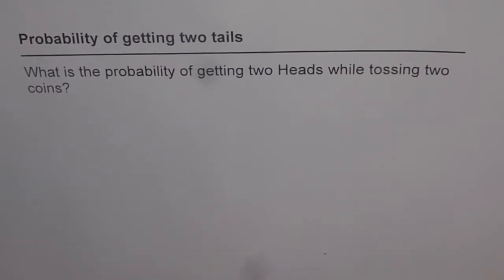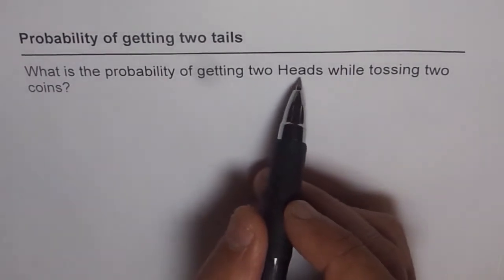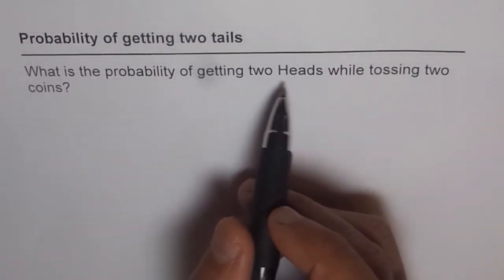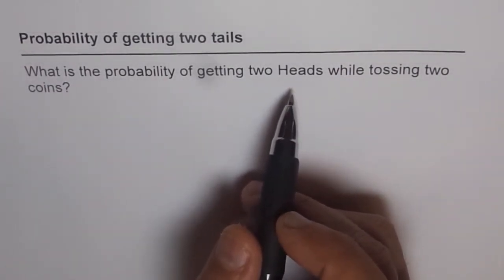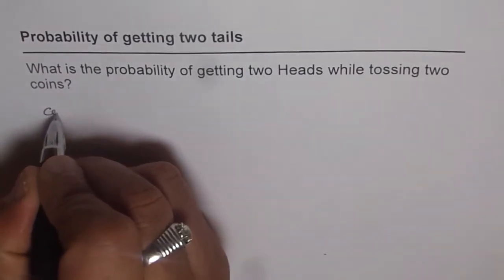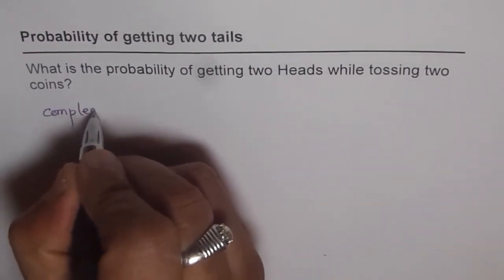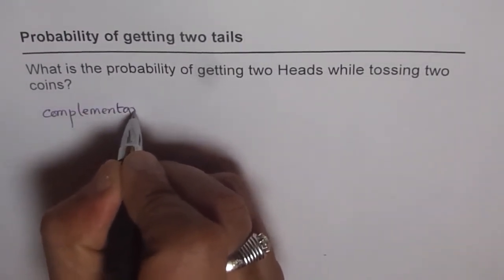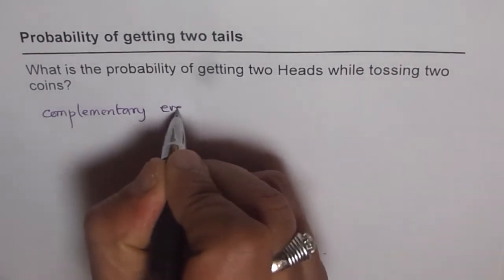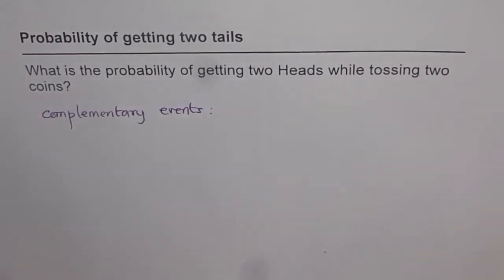We have two coins and when we toss, the question says find the probability of getting two heads. Whenever you toss a coin, there are two complementary events. Complementary events are those events where if one happens, the other cannot happen. So those are events which are complementary.